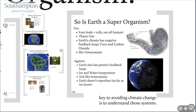Also, Earth doesn't reproduce — well, as far as we know. So overall, I'd say it isn't clear if our planet is a superorganism or not. But what is clear is that Earth's climate is made up of lots of systems, and the key to avoiding climate change is to understand those systems.